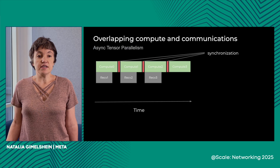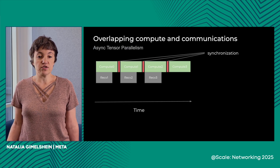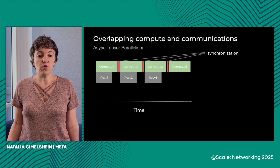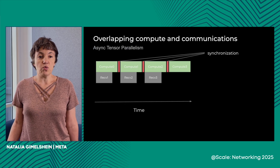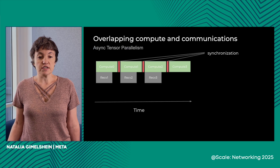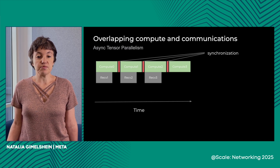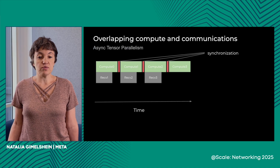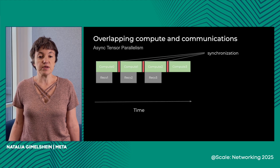Second, NCCL communications are two-sided — both sender and receiver have to call the send-receive routine, and both will be blocked until it completes. In many cases, we want to synchronize only strictly before using the received data, not use this two-sided communication routine. Symmetric memory solves both those problems, and we are able to implement async tensor parallelism using symmetric memory fully in Python — which eases experimentation — with performance better than previously available async tensor parallelism implementations.